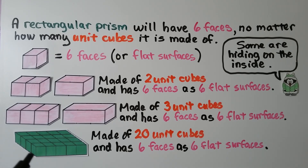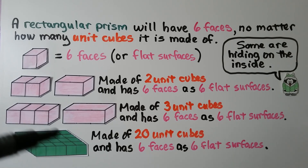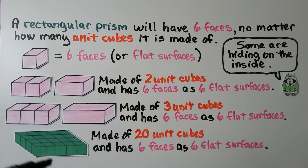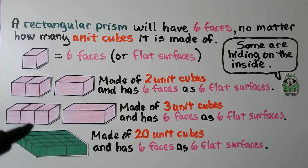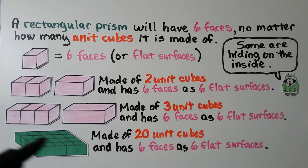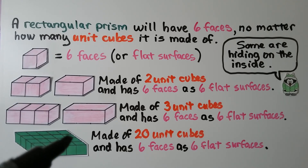This one is made of twenty unit cubes and it still has six faces — six flat surfaces. One flat surface on the top, one on the bottom, and four going around the sides. Some faces can be hiding on the inside between the lines, but it's still one big flat surface, so that's one face.